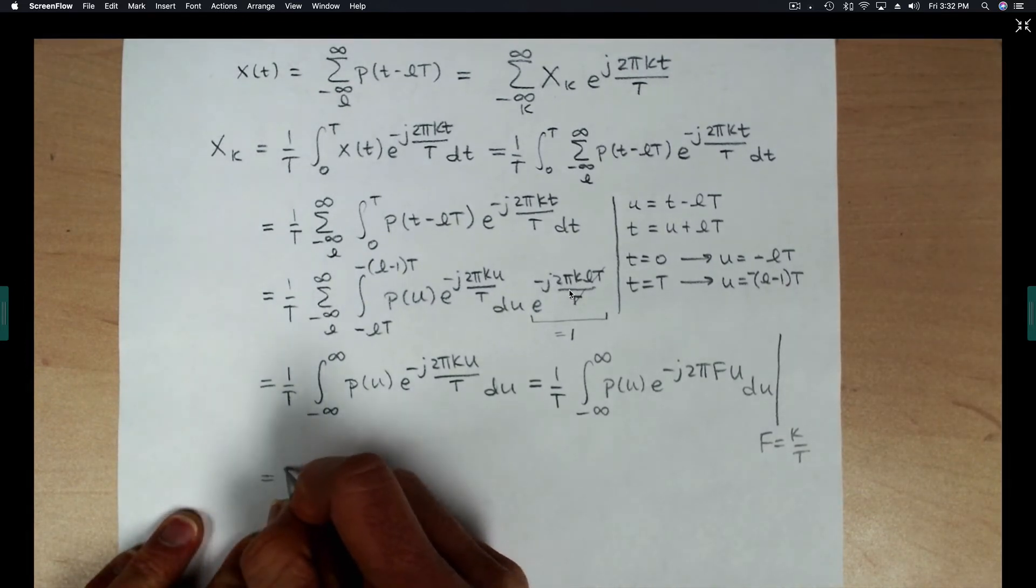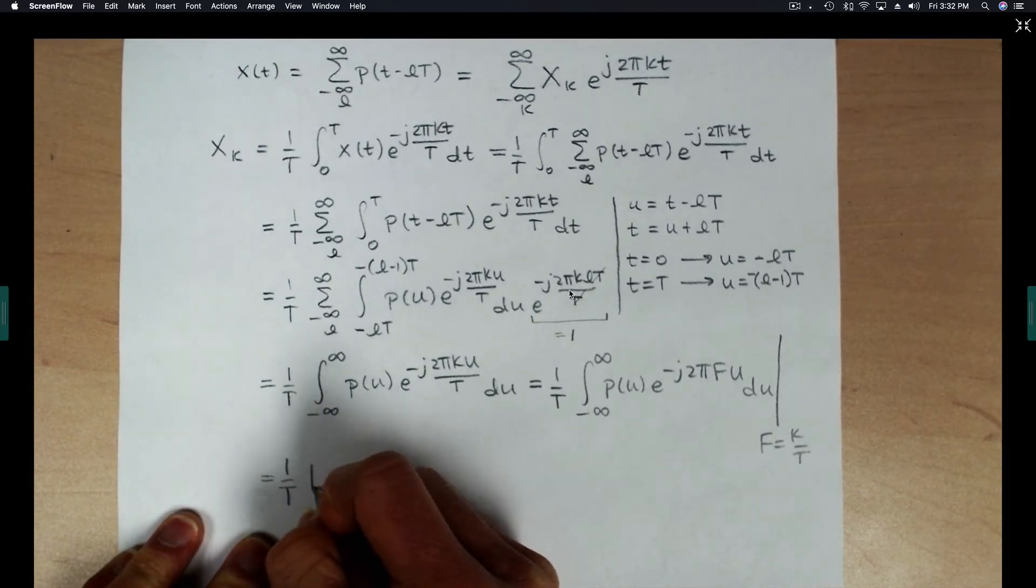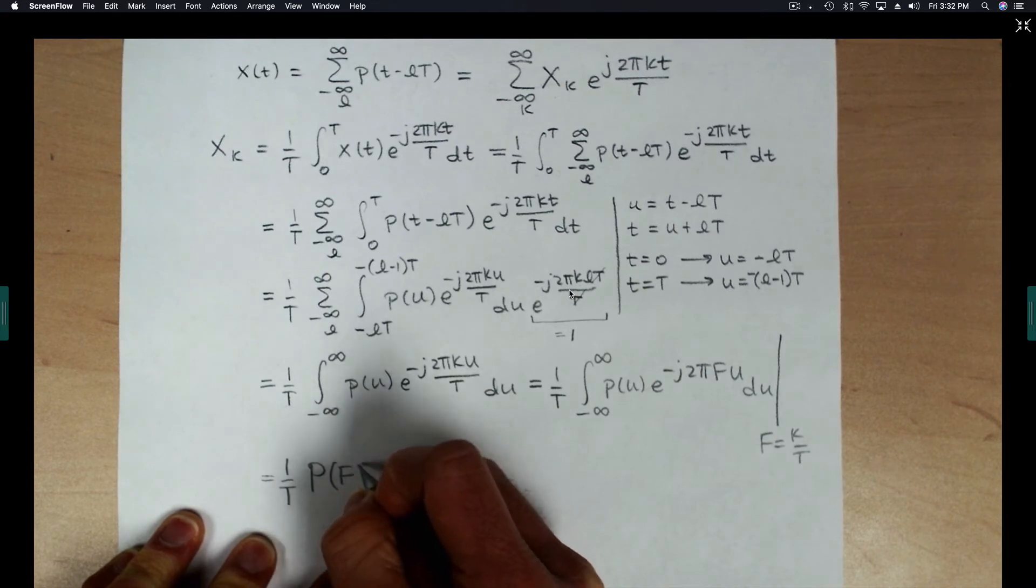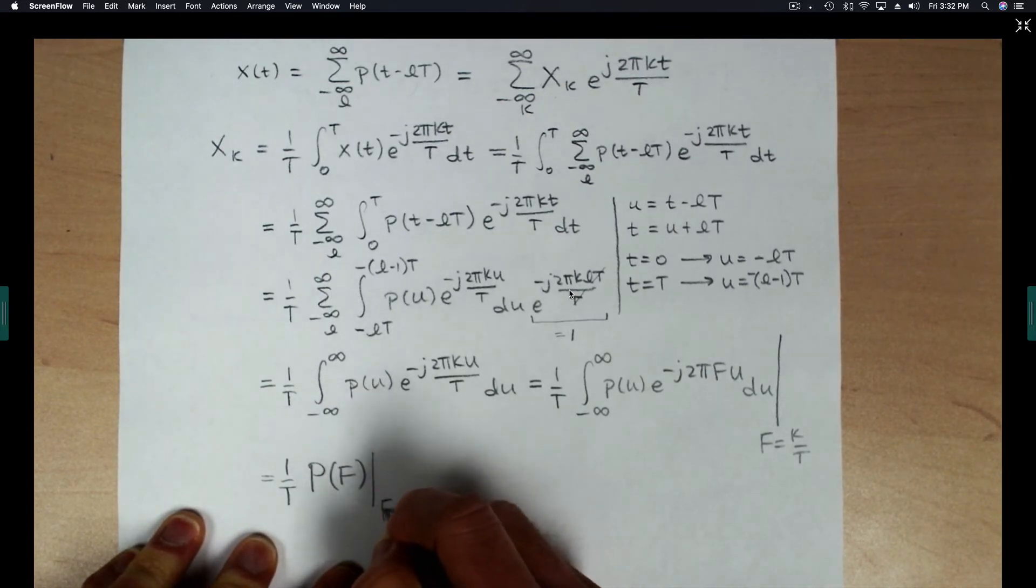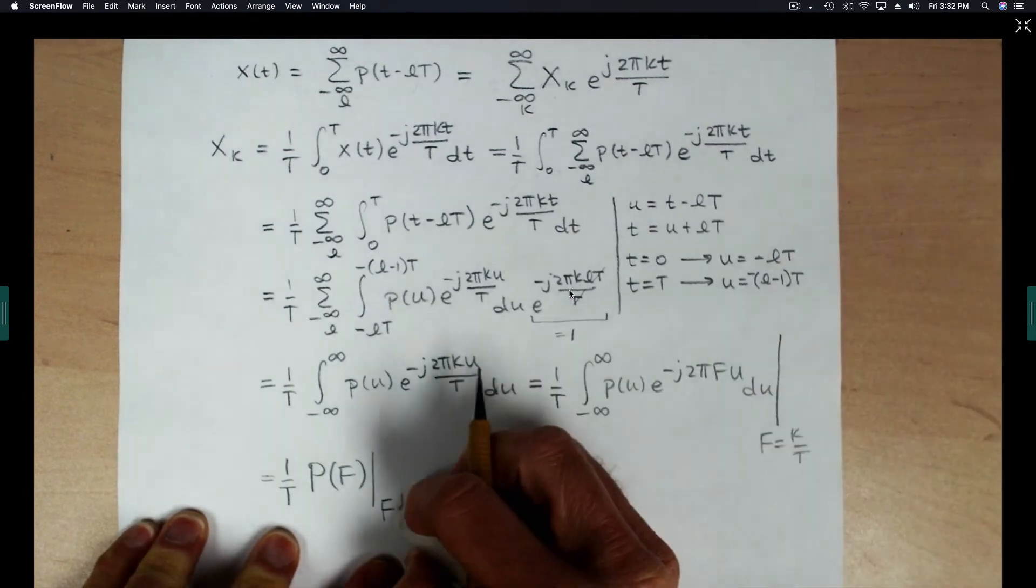So I'll just write that here. That's the function, or that's the Fourier transform P of F, evaluated at F equal K over T.